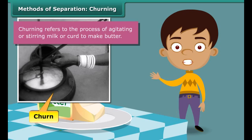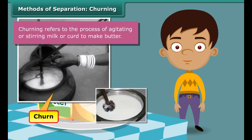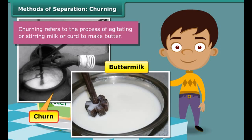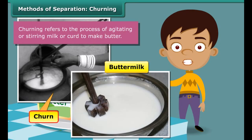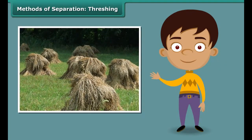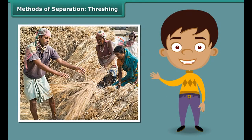This is butter. Do you know how butter is made? When milk is stirred vigorously in a churn, butter is obtained. The liquid left behind is the tasty, nutritive buttermilk that is relished by many as a refreshing summer drink. Do you see that two useful components emerge from a mixture when this method of separation is employed?